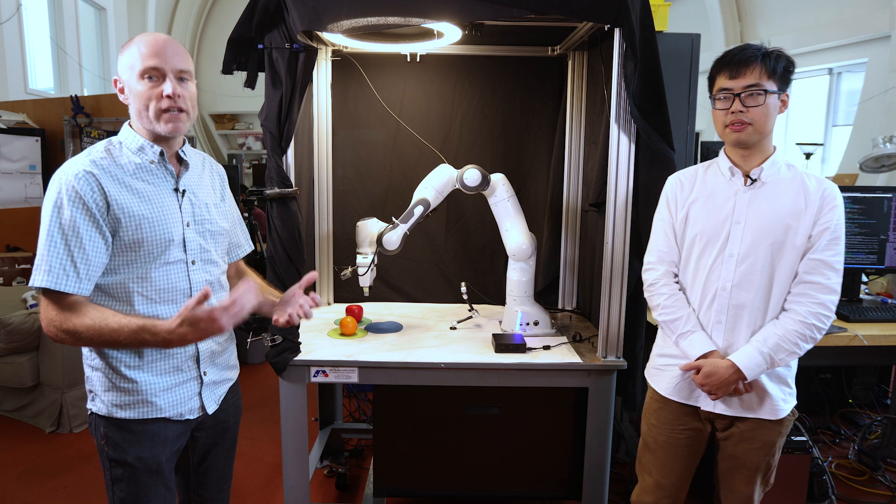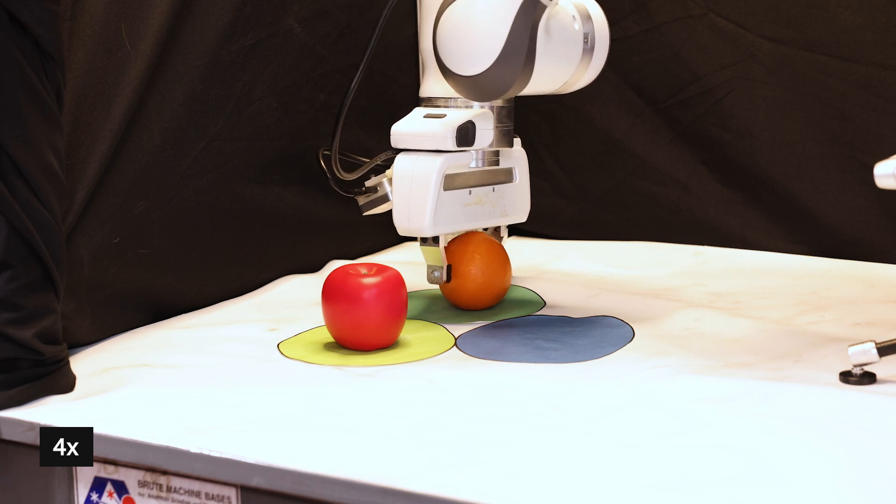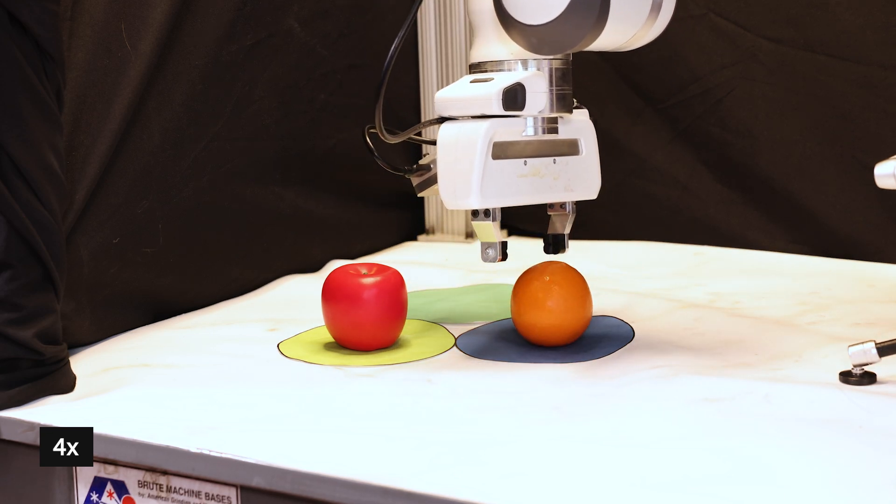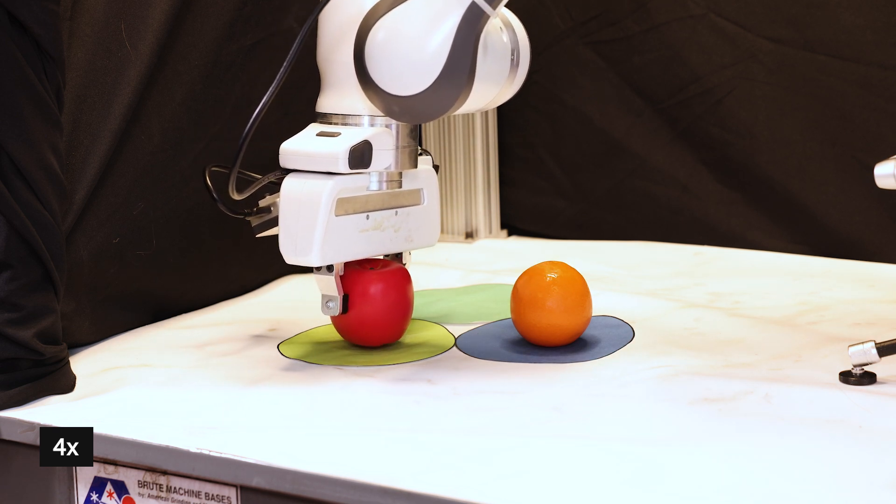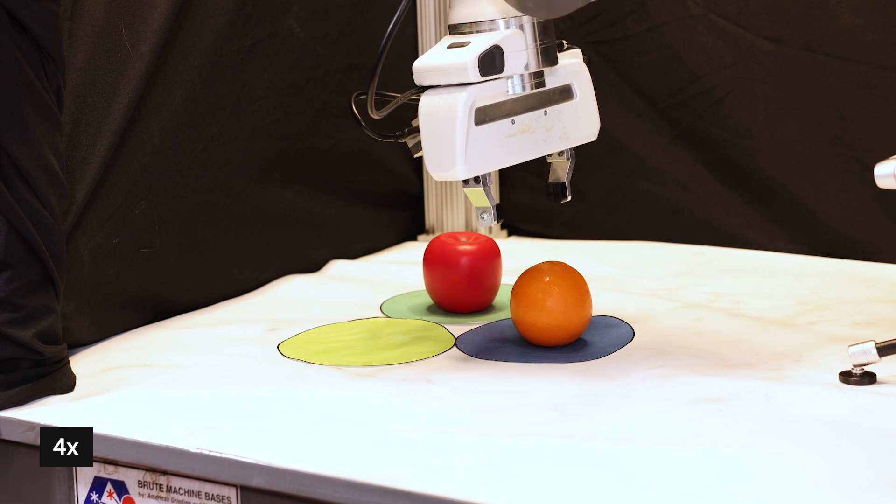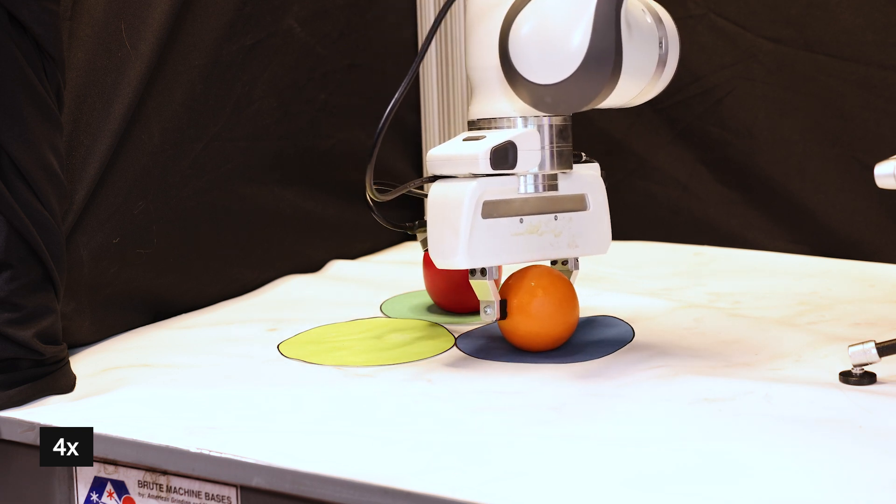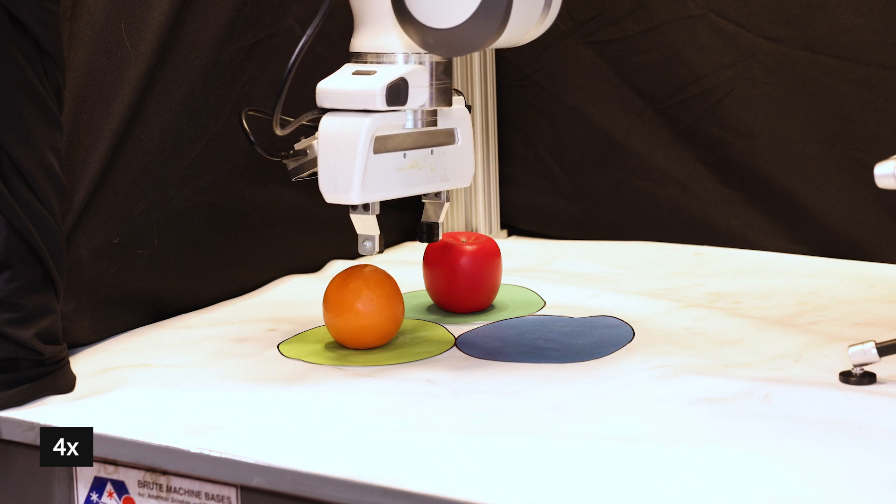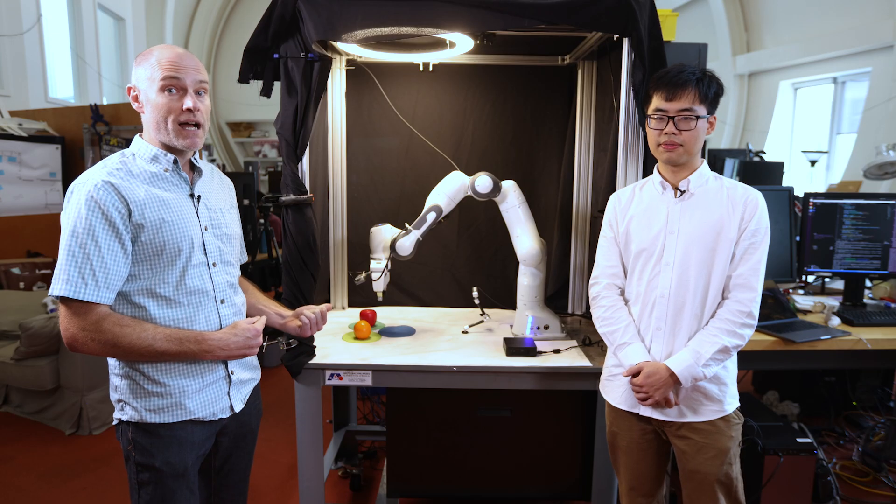So this is the setup here. The task is very simple: they just need to swap the fruit. But in order to do that, you have to move the fruit in such a way that the image you're looking at instantaneously doesn't tell you what actions you have to execute. It's a little puzzle, a very simple puzzle, but it shows that you need memory to accomplish this task.